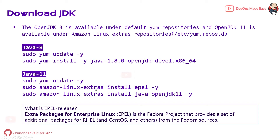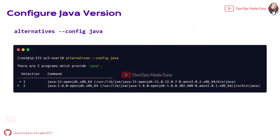In case you have both Java 8 and 11 installed, you should make sure that the default version is Java 11. In this demo we are going to see how to set the default Java version using the alternatives utility. Using the alternatives utility, you can set the default Java version when you have Java 8 and 11 installed on the same machine. We'll be setting Java 11 as the default version.